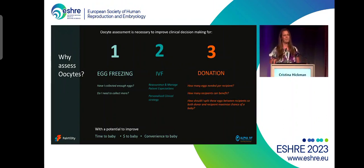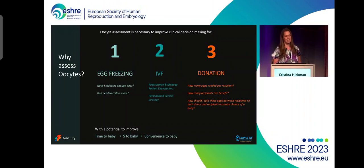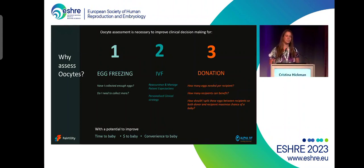Then we have the IVF patients. The IVF patients need to have the reassurance. We need to manage their expectations based on the quality of their sperm and the quality of their eggs, so that they understand what is happening next. This is very powerful to help them navigate, especially when they're about to receive bad news, and helps them cope better in that scenario. It also allows us to personalize the clinical strategy specific to their quality of egg. And then you have donation — within the donation, we split eggs between recipients and donors. How do we ensure that both sides have an equal chance of leading to a live birth?